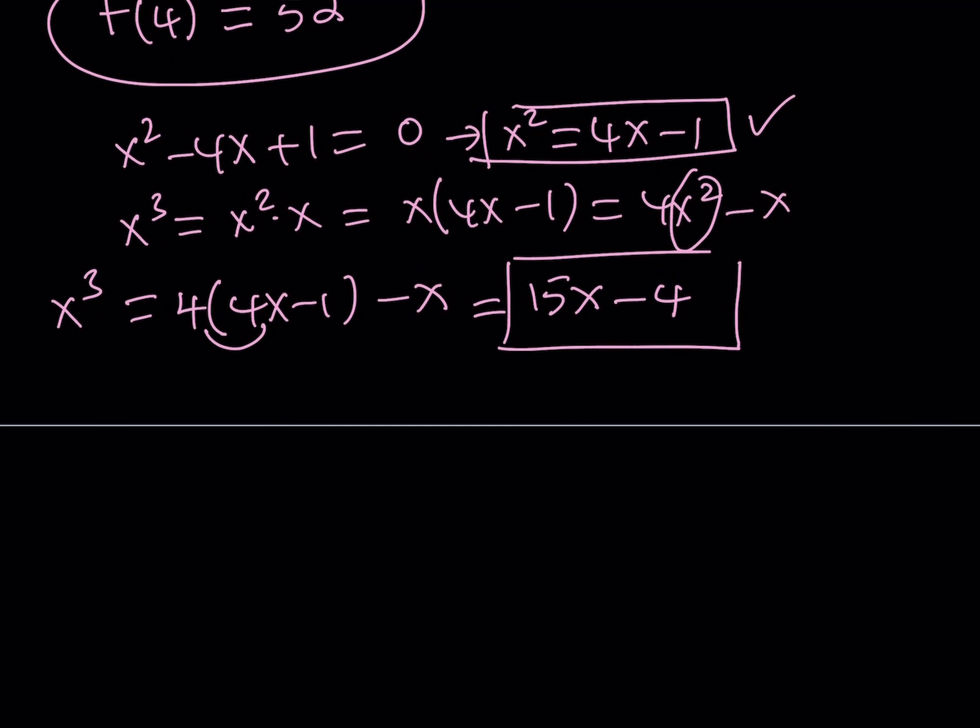So we started off with this. And now we're going to substitute this for x cubed. And remember, our expression is x cubed plus 1 over x cubed. If you replace x cubed with 15x minus 4, here and here, and then make a common denominator, multiply by itself.